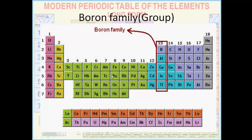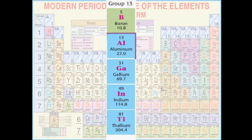So what is the boron family or group? It is the 13th group in the modern periodic table. Going from left to right, you can see the 13th group is the boron family. The elements present in this group are boron, aluminium, gallium, indium, and thallium. We call it the boron family because boron is the first element of this group.